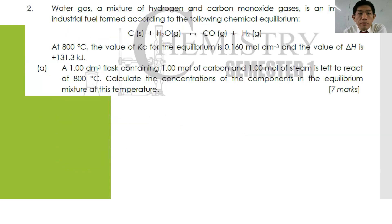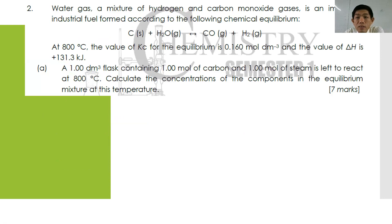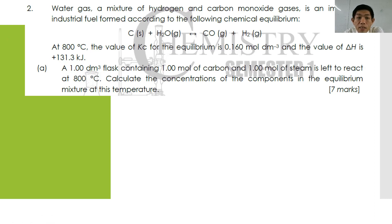We go immediately to question number 2. Water gas, a mixture of hydrogen and carbon monoxide, is an important industrial fuel produced according to the chemical equilibrium: C(s) + H₂O(g) → CO(g) + H₂(g). At 800 K, the value of Kc is 0.160 mol dm⁻³ and delta H is positive 131.3 kJ. Part A: a 1.00 dm³ flask containing 1.00 mol of carbon and 1.00 mol of steam is left to reach equilibrium at 800°C. Calculate the concentration of each component at equilibrium — 7 marks.